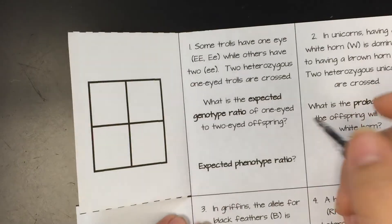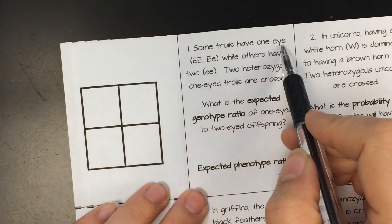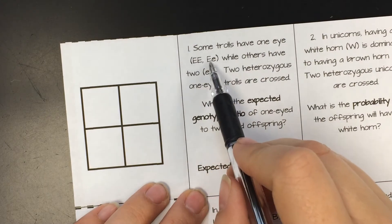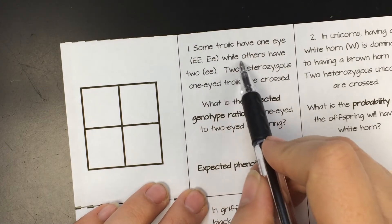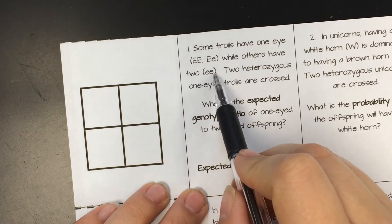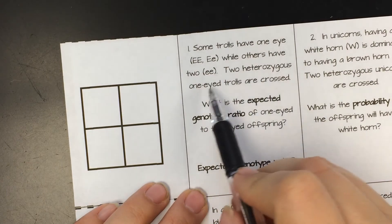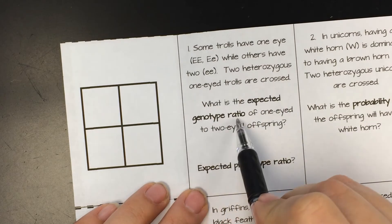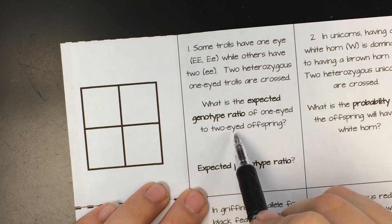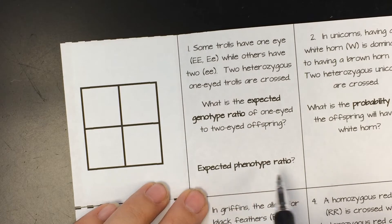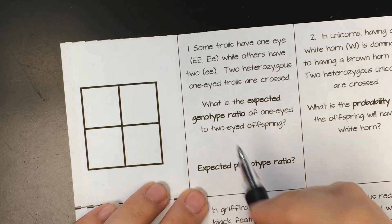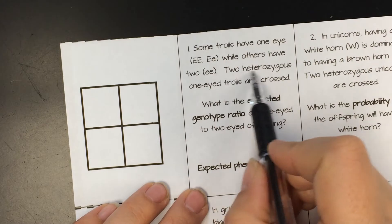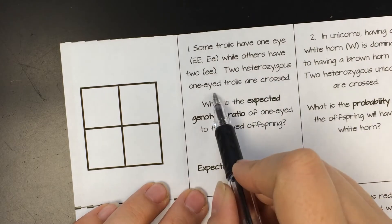But here we go. So some trolls have one eye. So that could be the big E, big E, or big little. So that must be the dominant trait. While others have two, little e, little e. Two heterozygous one-eyed trolls are crossed. What is the expected genotype ratio of one eye of two-eyed offspring? And the expected phenotype ratio.